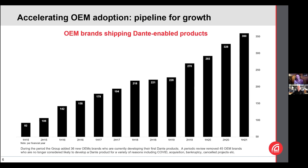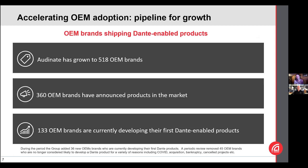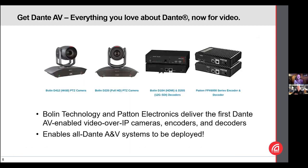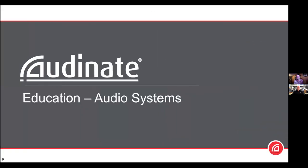We have up to 518 OEM brands developing products — 360 have shipped or announced products, while the remaining 133 are developing their first Dante-enabled product. This includes not only traditional Dante audio but also Dante AV, which was recently announced with products available to purchase: PTZ cameras, plus encoders and decoders from Bowen and Patton. Exciting news, but let's focus more on the audio side.